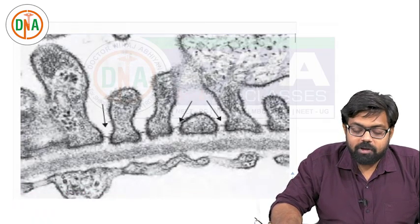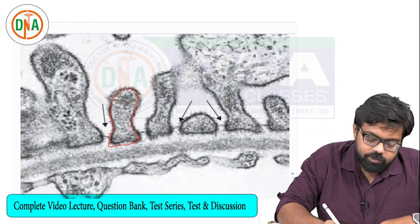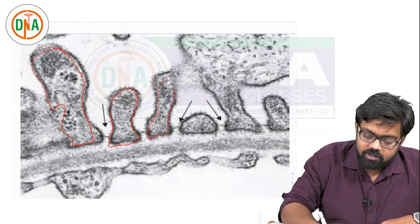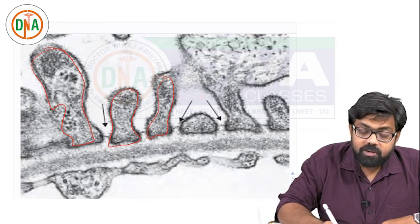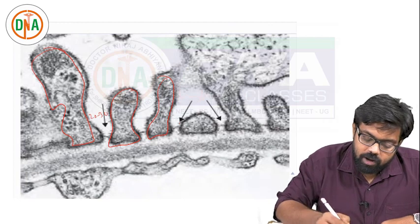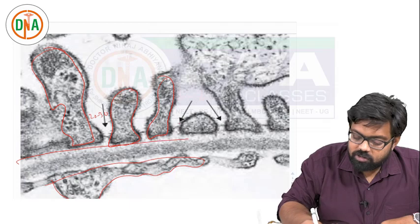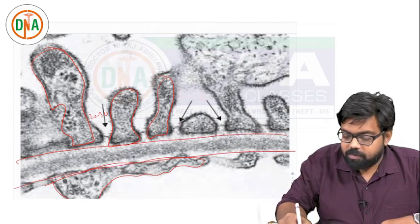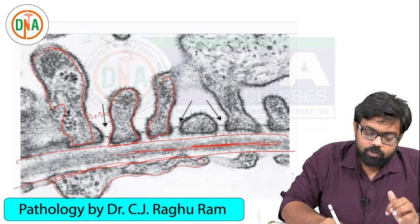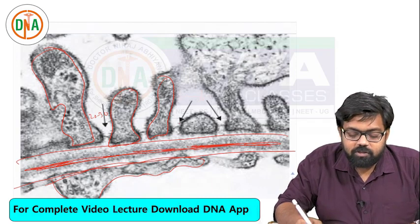This is a real electron microscopic image showing a normal glomerulus. These are the foot processes - these are the visceral epithelial cells. These are the gaps between the visceral epithelial cells, which are around 20 to 30 nanometers. And this is an endothelial cell. This is the basement membrane - the central darker structure is the lamina densa, and the outer ones are the lamina rara interna and externa.